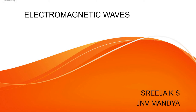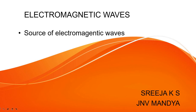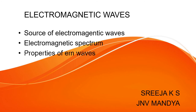Today in this video we will discuss about what is meant by electromagnetic waves, which are the sources of electromagnetic waves, how many types of waves are there, what is their wavelength, frequency, and the uses of electromagnetic waves. We will discuss the source of electromagnetic waves, the electromagnetic spectrum, properties of electromagnetic waves, and uses of electromagnetic waves.